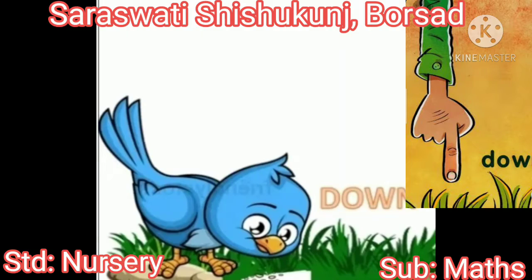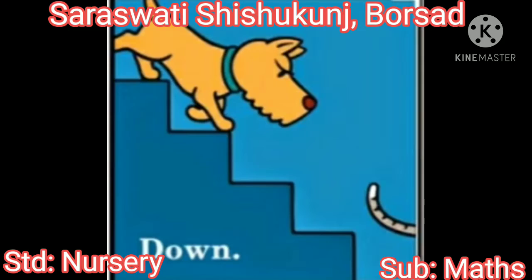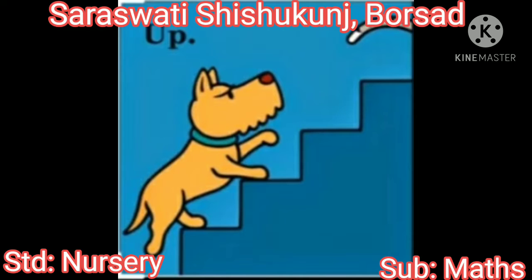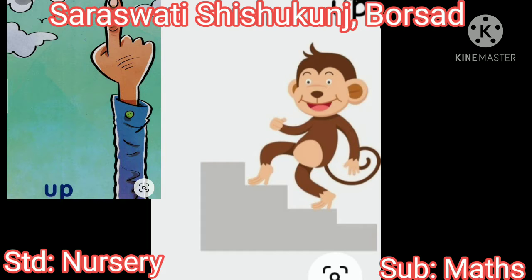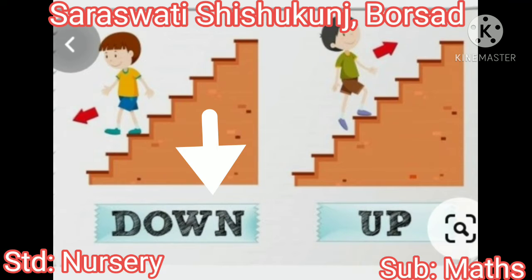Look at this picture. This bird is down side and this small bird is up side. The dog is going down side. The monkey is going up and this monkey going down. This boy going down, this boy going up.